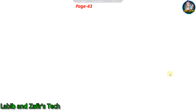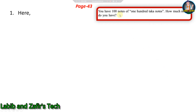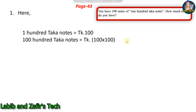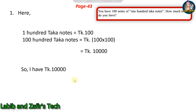Our first word problem from page 43: you have 100 notes of 100 taka notes, how much money do you have? One 100 taka note is equal to taka 100, so 100 notes of 100 taka is equal to taka 100 into 100, that is 10,000 taka. So I have 10,000 taka.